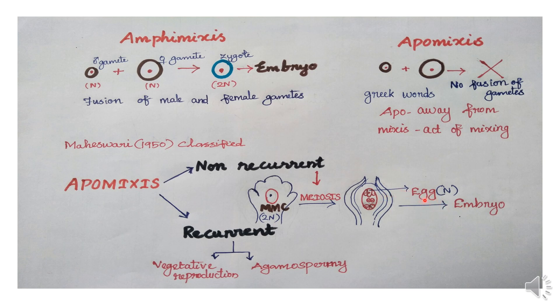For example, the egg is a haploid cell. This cell undergoes non-recurrent apomixis, so the embryo produced is haploid — it has a haploid chromosome set. But this embryo is sterile in nature. This is non-recurrent apomixis. For example, Taraxacum and Hieracium plants.